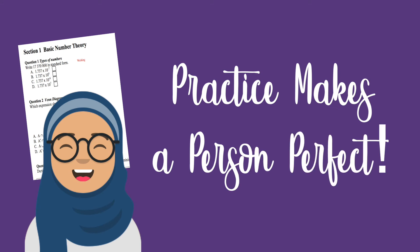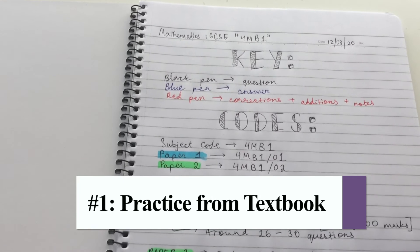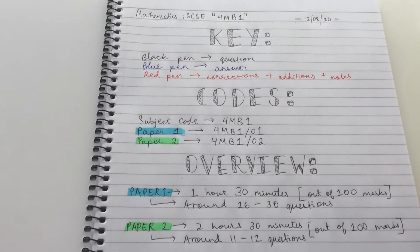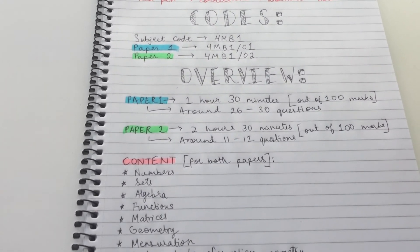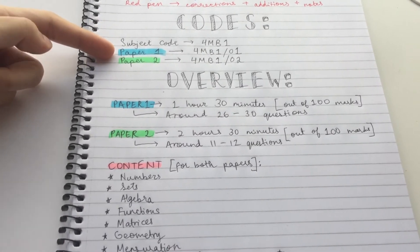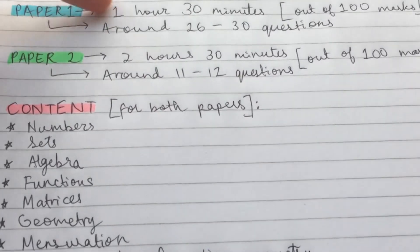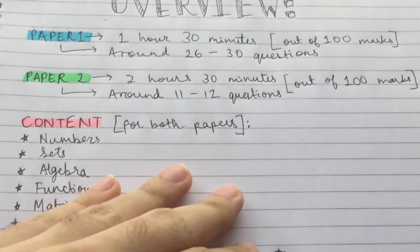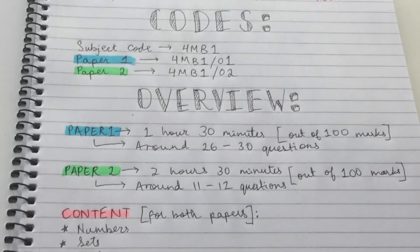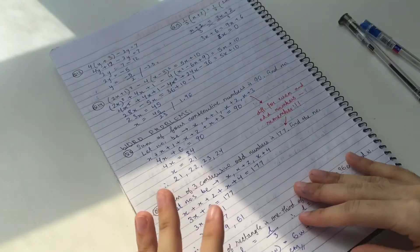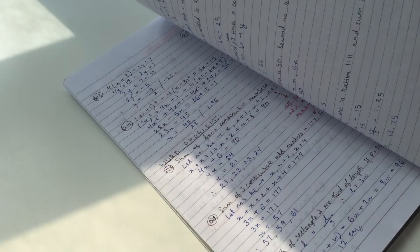Probably the most important tip for maths is to practice, and I'm going to divide this into three parts. Number one, you can practice from a textbook. I have a practice book where I practice questions. On the first page, I organize it according to key codes and a small overview of the entire subject — the paper codes for IGCSEs according to Pearson, and an overview including duration, number of questions, and a summary of the content to be assessed. Red ink is for corrections of anything I got wrong or for notes. I'm going to demonstrate one question from the textbook in this video.